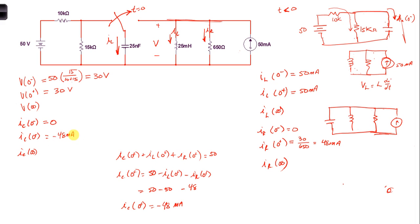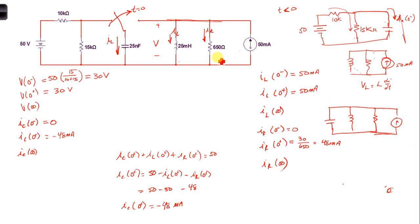How are we supposed to understand that negative 48? We've defined the current in the capacitor as leaving the node. A negative 48 milliamps means the current is actually entering the node. So we have positive 48 milliamps and 50 milliamps coming into the node, 50 milliamps leaving through the inductor, and 48 milliamps leaving through the resistor.